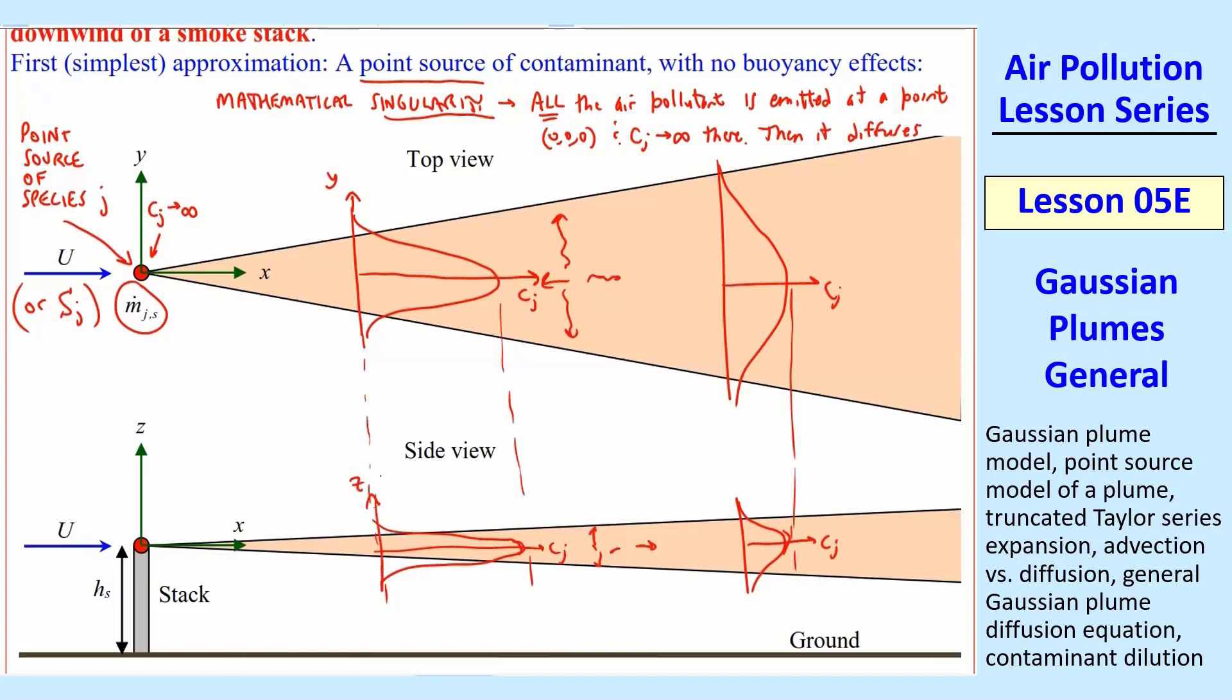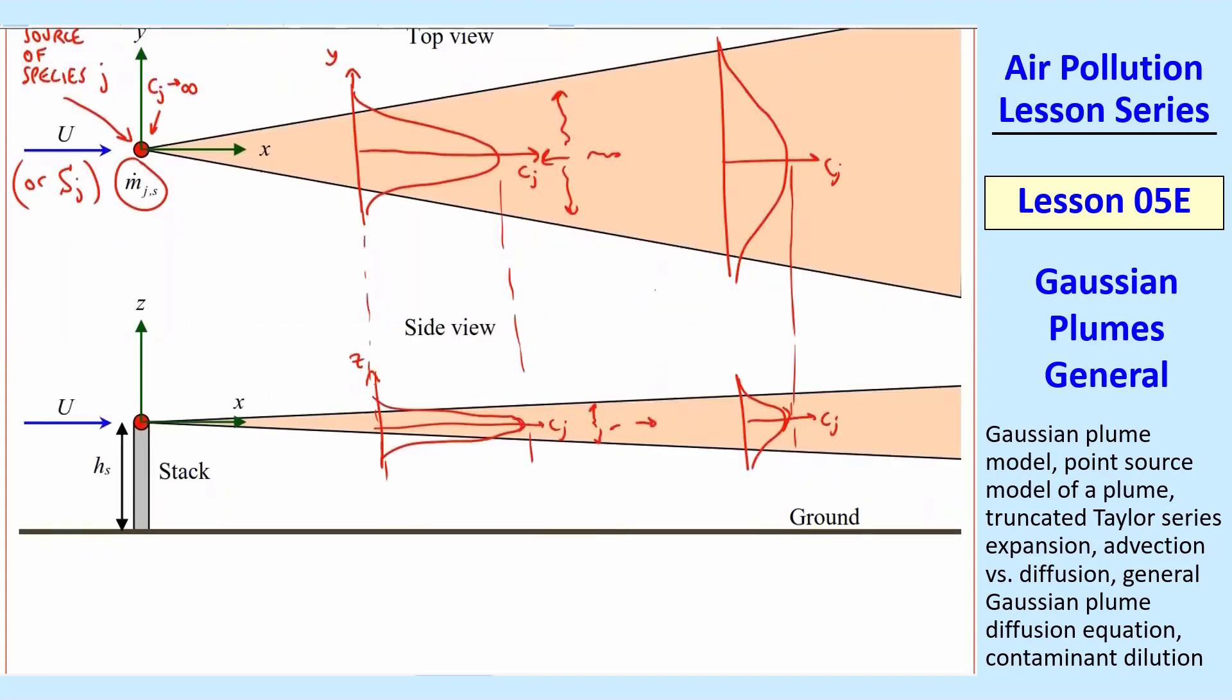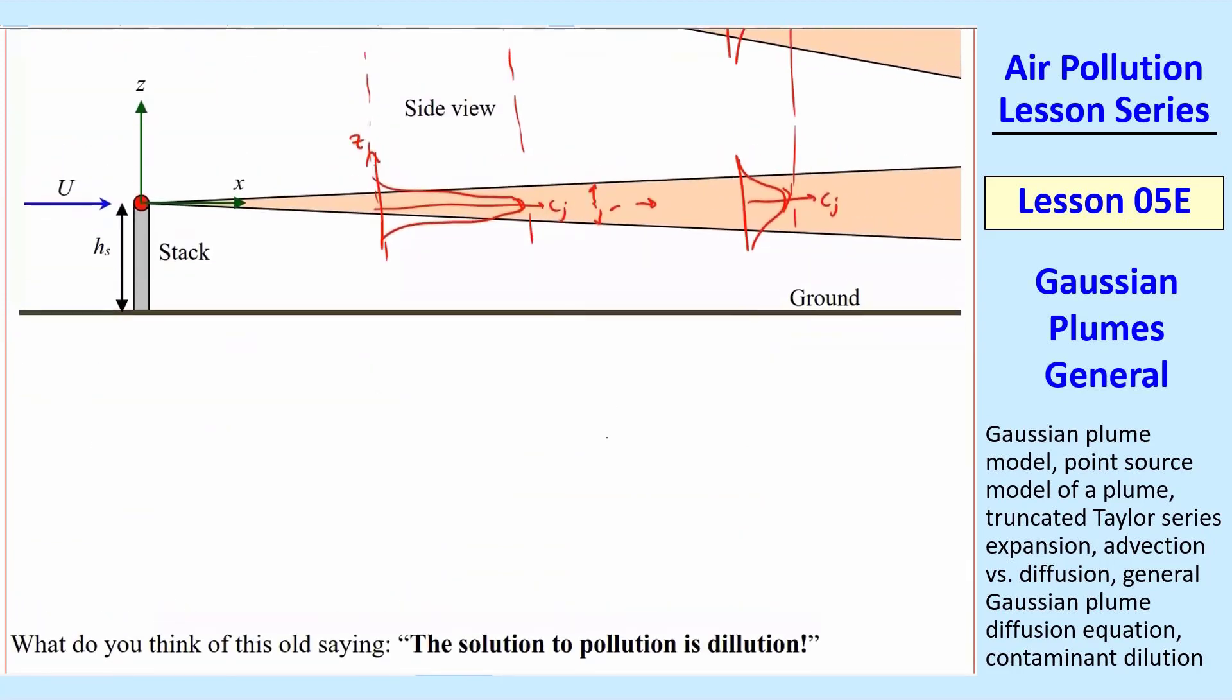That depends on atmospheric stability conditions, of course. But there's diffusion going on. There's diffusion in the Y direction, and here there's less diffusion in the Z direction. There's also diffusion in the X direction. So the concentration is still Gaussian, but it gets wider and it gets smaller in magnitude. These have to be the same C_j—in this case it's versus Y, in this case it's versus Z.